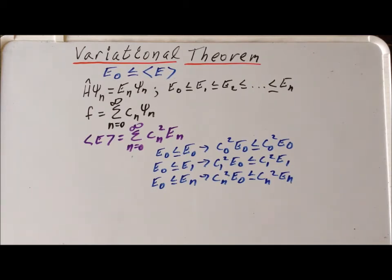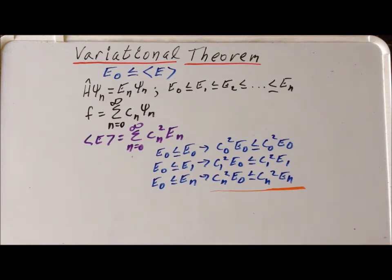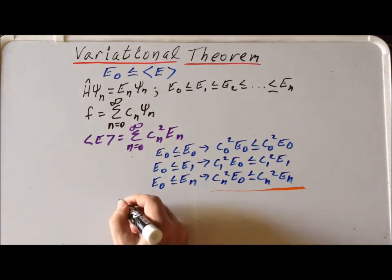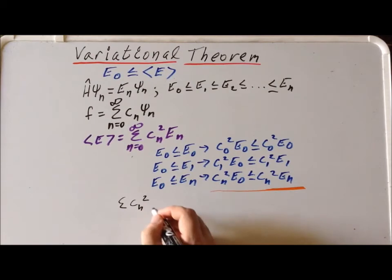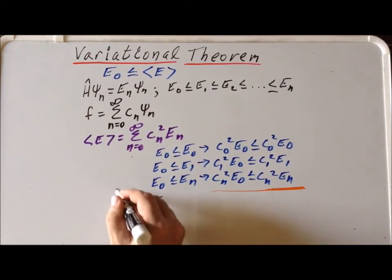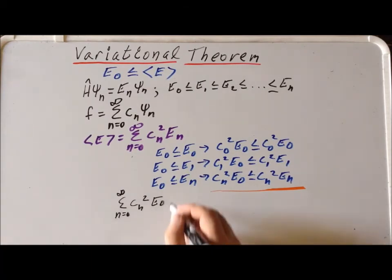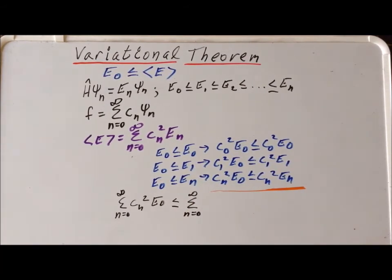We know that we can add up the inequalities. To the left hand side, we get the sum of c sub n squared times e sub 0, n equals 0 up to infinity, which is going to be less than or equal to the infinite sum n equals 0 to infinity of c sub n squared times e sub n.